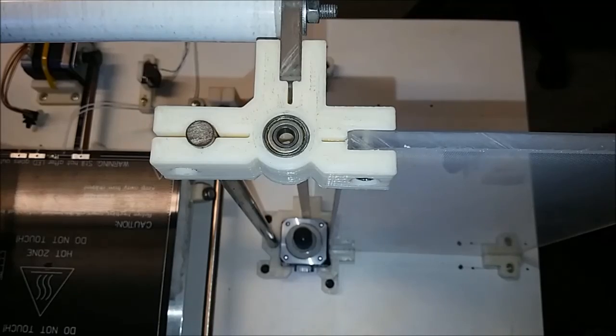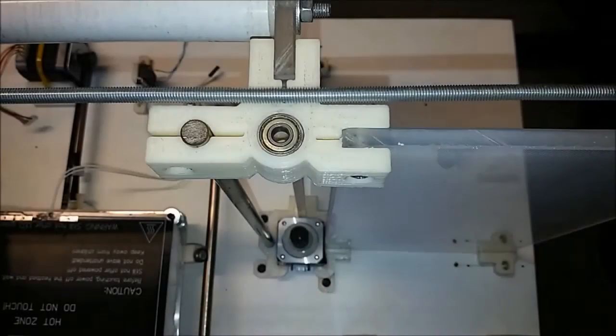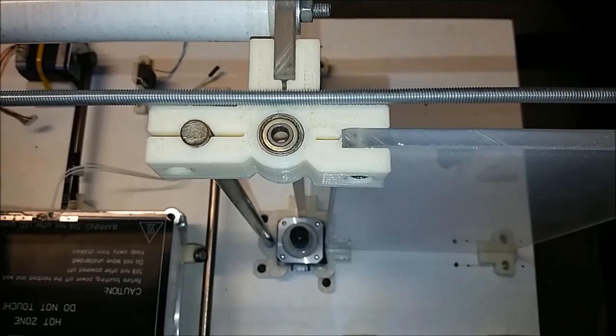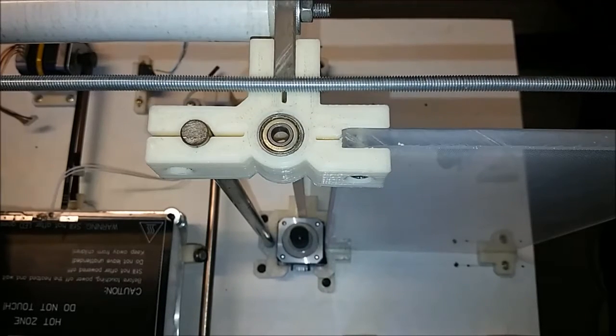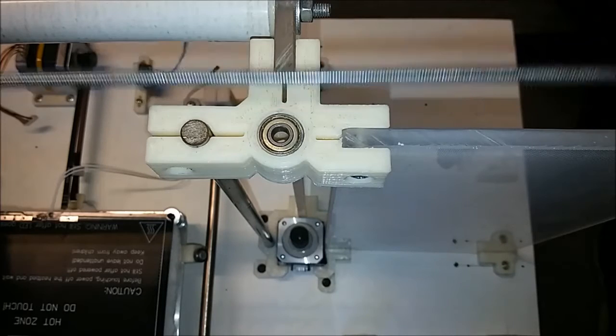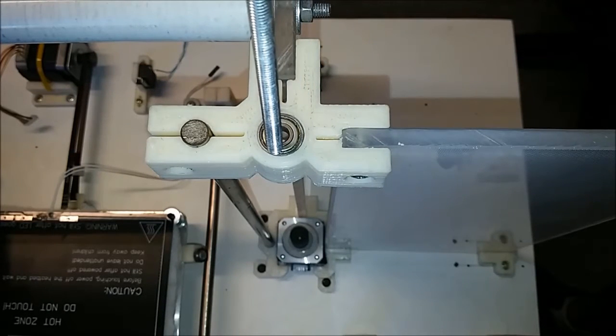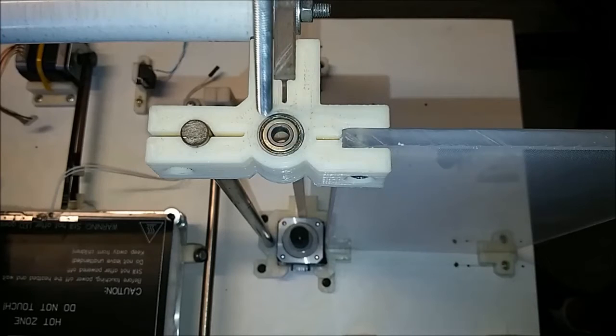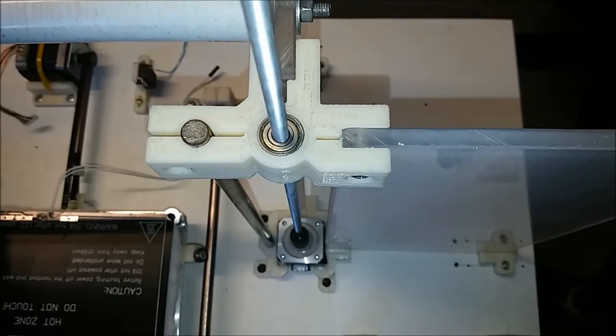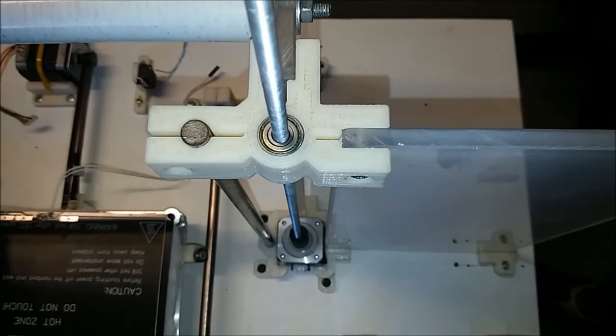Do the other side and then we'll fit some 6mm rods into it. We've organized some M6 threaded rod and we're just going to cut that to length now. We're just going to pop it through our Z-axis, through the bearing that we just installed, and run it right down to the top of the motor.